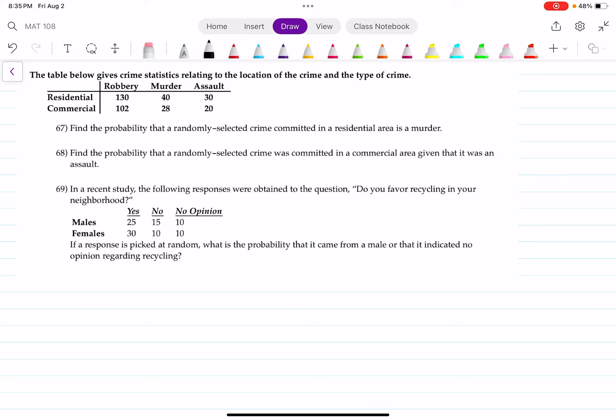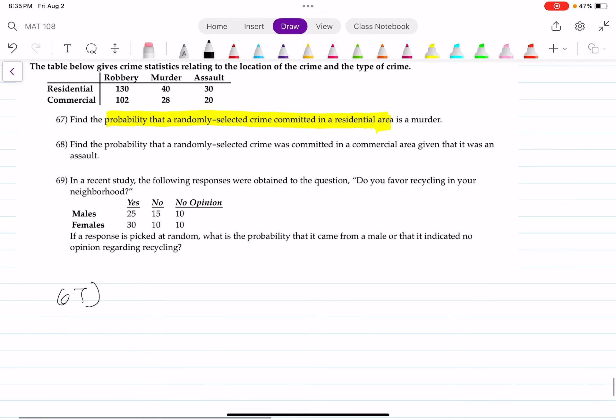Okay, so that question is oddly specific. Find the probability that a crime selected in a residential area is committing a murder. This sounds like a conditional. So for number 67, I'm going to use the conditional probability formula.